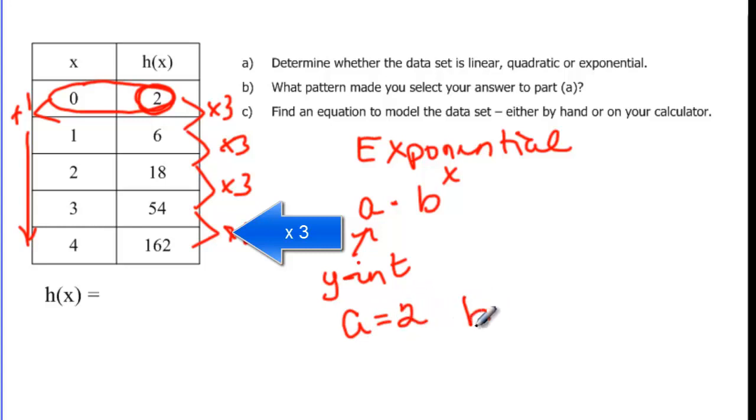And our b is what we were multiplying every time, so that's times three. So h of x is equal to a, which is two, times my base, which is three, to the x.